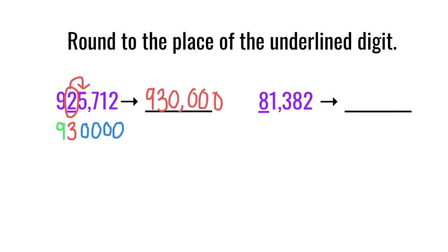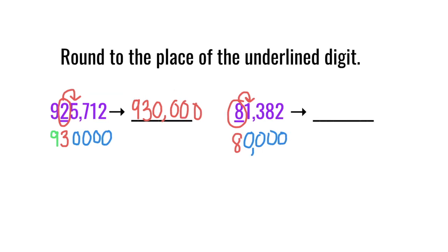Let's look at the next one. We're going to circle the eight and look next door — the one has no power, so that one tells the eight to stay an eight, and everything after it becomes a zero, so we have 80,000. When rounded to the nearest ten thousand, 81,382 becomes 80,000, because that one next door is four or less, so we let that eight rest — it didn't have enough power to bump the eight up to a nine, so it stays an eight: 80,000.